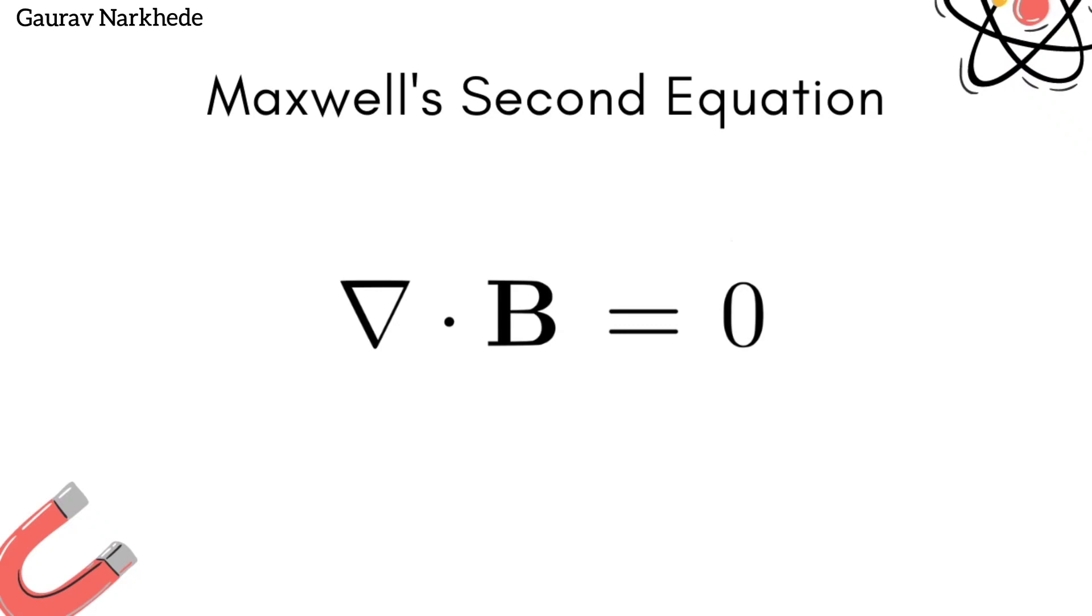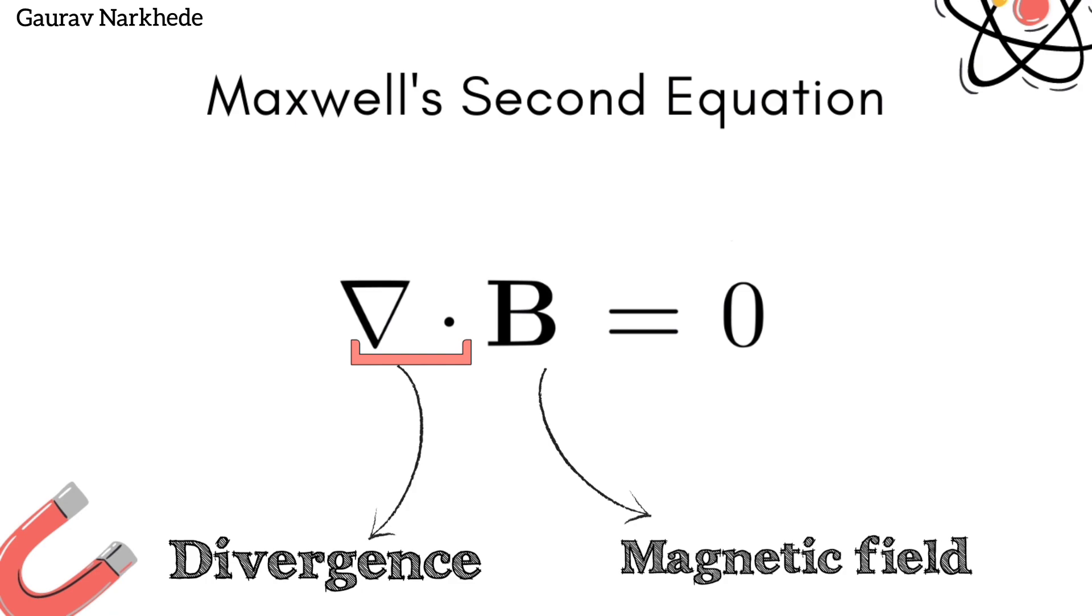This is Maxwell's second equation. B indicates the magnetic field, an inverted triangle with dot is divergence.